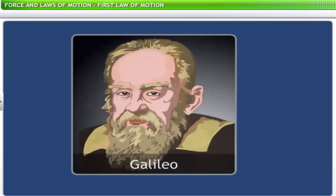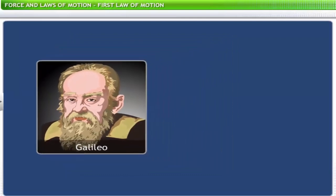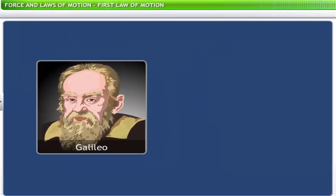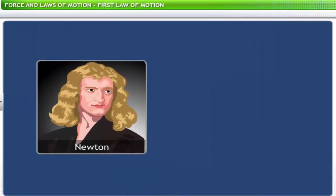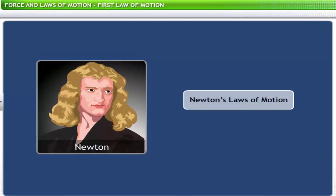Galileo was the first to abstract from what he and everyone else saw: an object in a state of motion possesses an inertia that causes it to remain in that state of motion unless an external force acts on it. Sir Isaac Newton further studied Galileo's ideas on force and motion and presented three fundamental laws that govern the motion of objects — known as Newton's laws of motion.